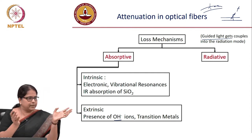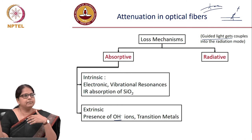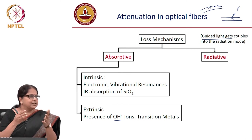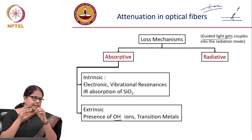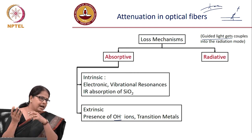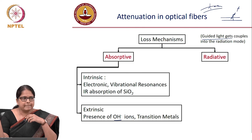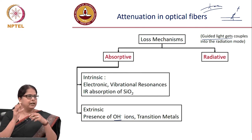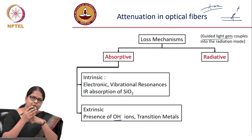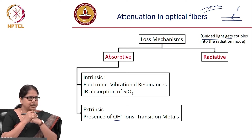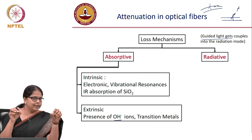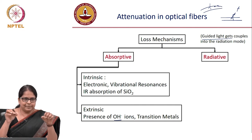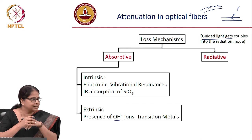There are two types of scattering: Rayleigh scattering and Mie scattering. Mie scattering occurs when the scatterer is large compared to the wavelength of light, while Rayleigh scattering applies to small scatterers. In optical fiber, Mie scattering is typically absent because the fiber drawing process is optimized to eliminate large scatterers — all scatterers in the system are small.